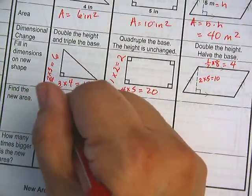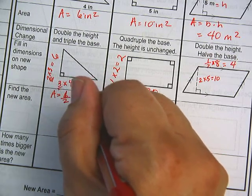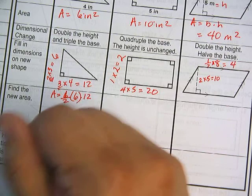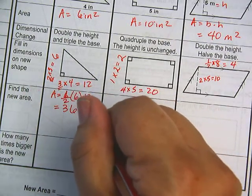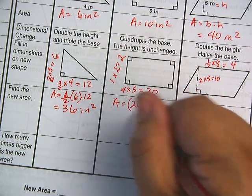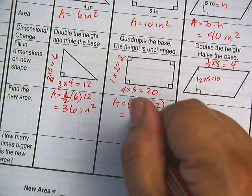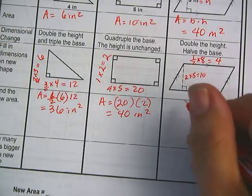So let's go ahead and calculate our areas just like we did before. 6, one half base times height. One half, 6 times 12. So I'm going to get 36. Here it's going to be base times height, 20 times 2. So I'm going to get 40 inches squared.